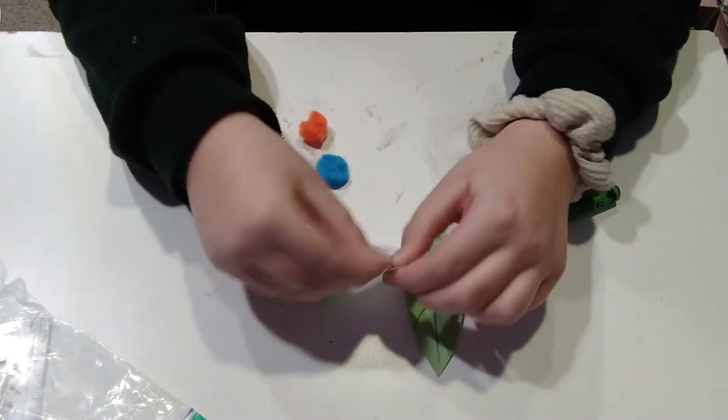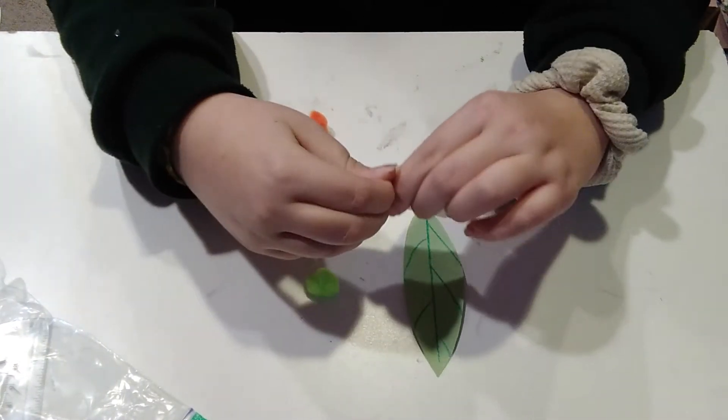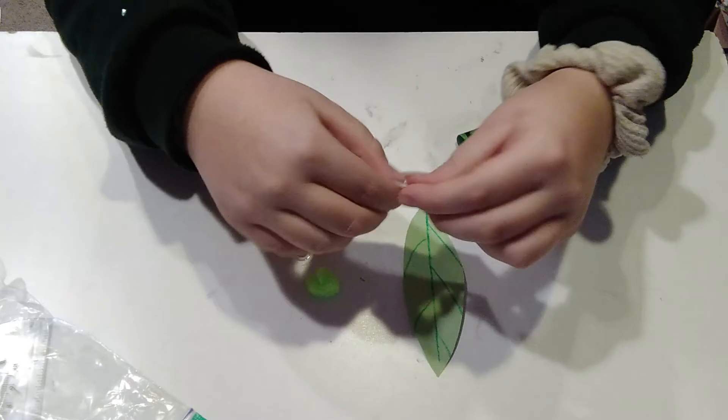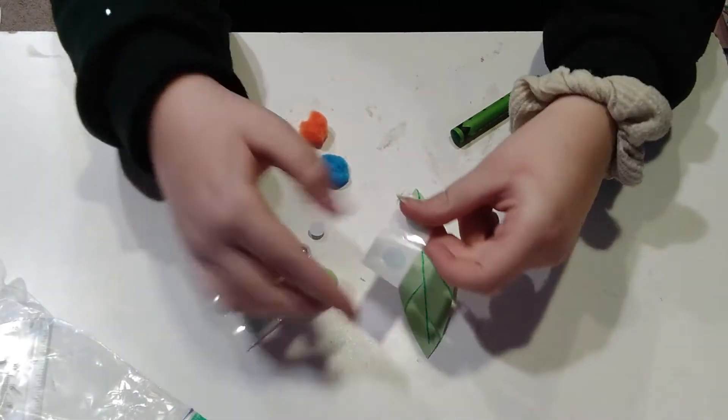Next Hazel is going to take our glue dots and she is going to put them on each of the different pom-poms so that they can go on the leaf to create our caterpillar shape.